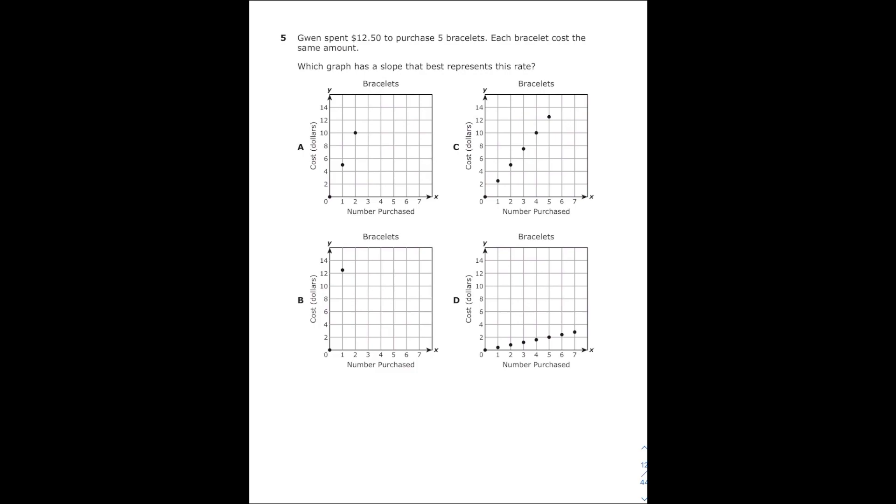This is number five from the 2022 eighth grade math STAR test. It says Gwen spent $12.50 to purchase five bracelets. Each bracelet costs the same amount. Which graph has a slope that best represents this rate?